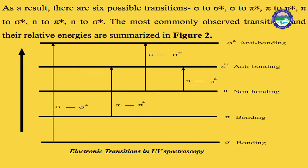In UV spectroscopy, there are different energy states: bonding, non-bonding, and anti-bonding. The darker lines represent lower energy states and higher lines represent higher energy states. Electronic transition occurs when electrons in a compound absorb energy and move from a low energy state to a high energy state. There are four types of electronic transitions in UV spectroscopy.